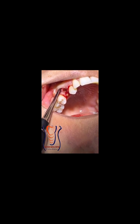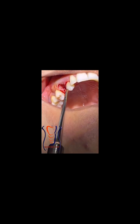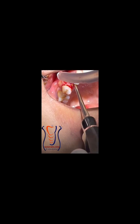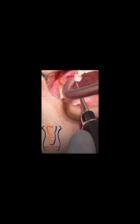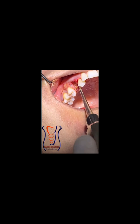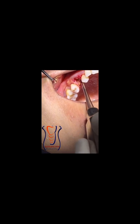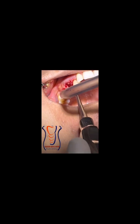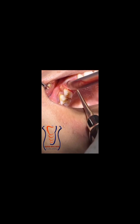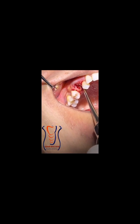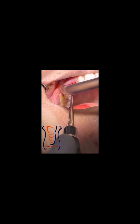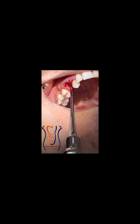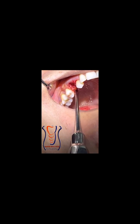We are using the couplant elevator to wedge between the remaining root and the bone on the opposing line angles. Now we are using the meso-palatal line angle, and then we insert it in the buccal line angles. We switch to the other line angles until the root is completely loose inside its socket.